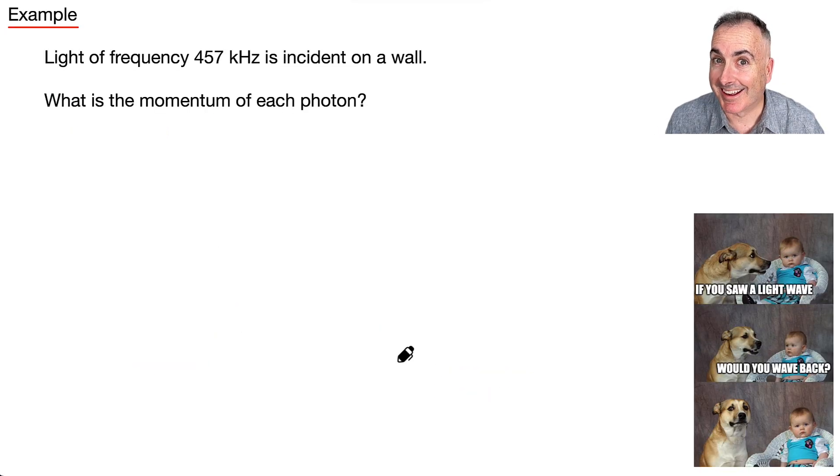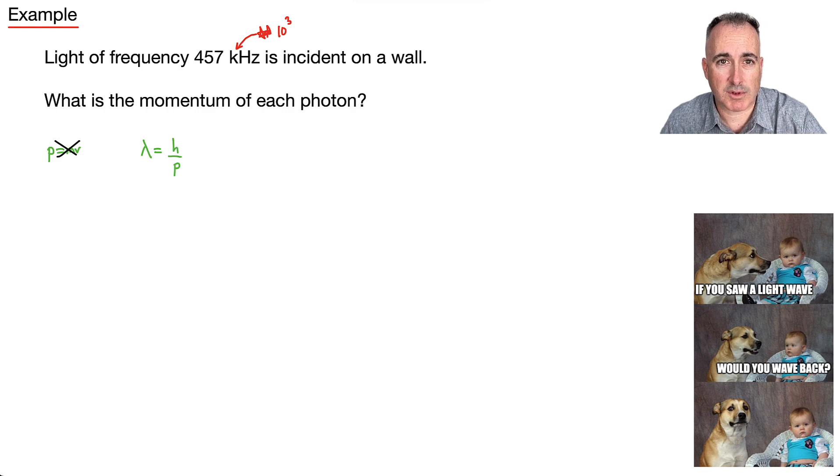If you saw a light wave, would you wave back? We've got an example here. Now we have light of frequency 457 kilohertz, and I want to focus on this. Watch out. Kilohertz. Remember, that means times 10 to the power of 3 kilo. That's incident on a wall. And we're asked for the momentum of the photons. In other words, this is just an example. It's kind of like that light sail I just showed you. So this is light hitting something and imparting a momentum on it. So what is the momentum of one photon? So you might be tempted to use the equation, well, momentum is just P equals MV, but then you've got a problem because light doesn't have a mass, so that means you can't use it. But luckily, we have our new equation. We just learned that lambda equals H over P. Well, that means if I want the momentum, I just get P, and I just put it over here, and the lambda comes down. That means I just have P equals H over lambda. Piece of cake. That should be really easy.